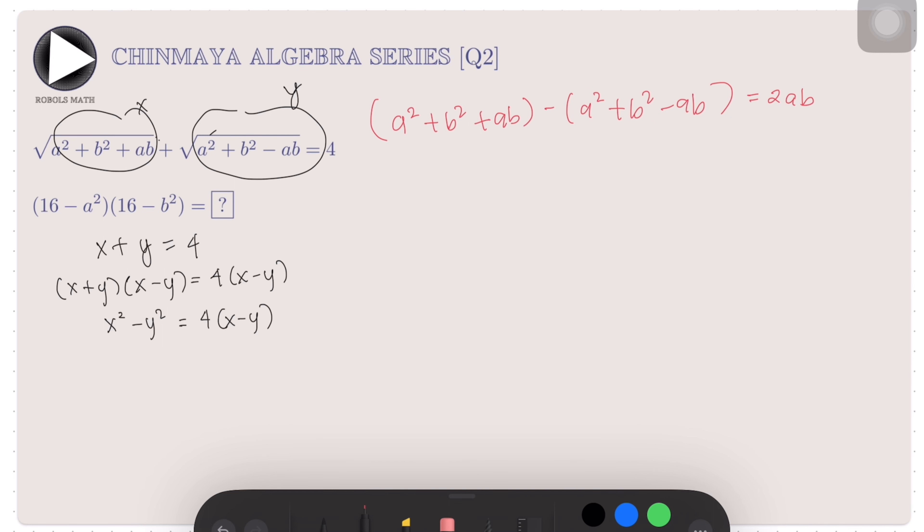Therefore, this left side here is just 2ab. And the right side is 4(x - y). If we divide both sides by 4, we get that x - y = ab/2.